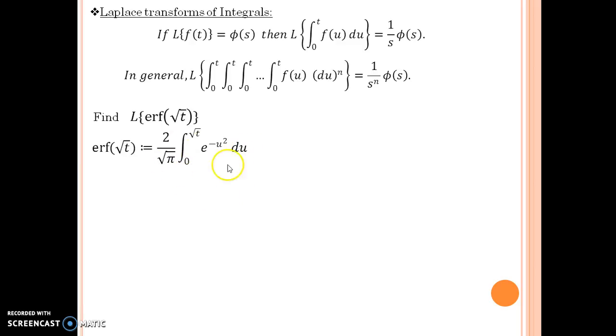I am now going to change the format of this function the way it looks. So by using our change of variable method, I get u square equals m then u equals root m. Also, what I happen to get is du equals dm upon 2 root m. As well as since the variable is changed, then I am supposed to take care of the limits. So limits would be when u equals 0, m is 0 and when u equals root t, m is t. That is what you get when you substitute here.